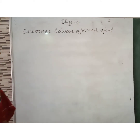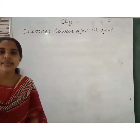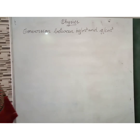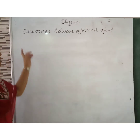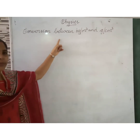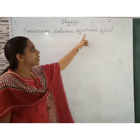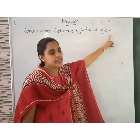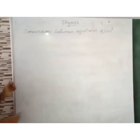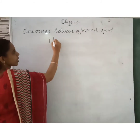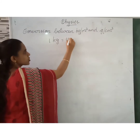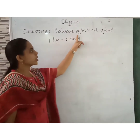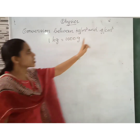Now we are going to study some numerical questions. Before that, we have to know the formula for conversion between kilogram per meter cube and gram per centimeter cube. One kilogram is equal to one thousand grams.